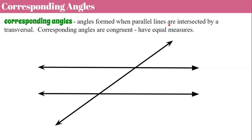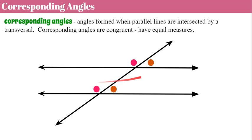Now let's talk about corresponding angles. Corresponding angles are formed when parallel lines are intersected by a transversal, and corresponding angles are congruent — meaning they have equal measures. Here are my parallel lines and my transversal. This angle corresponds to this angle; this angle corresponds to this angle. These are both above their line and to the left of the transversal. The orange dots are to the right but still both above — so they're in the same location. The pink dots are congruent; the orange dots represent two congruent angles.